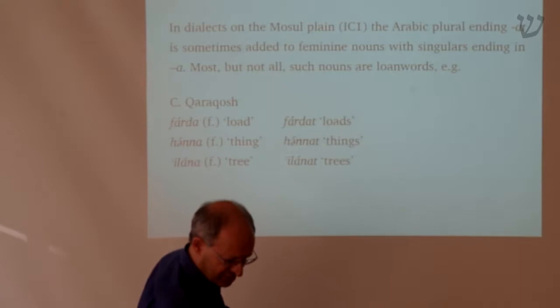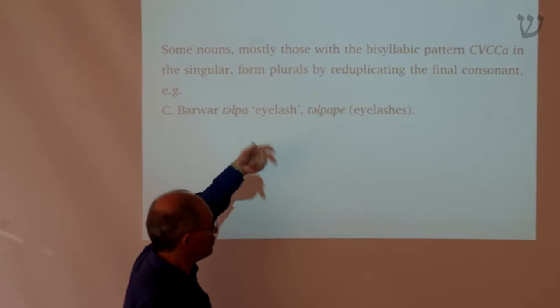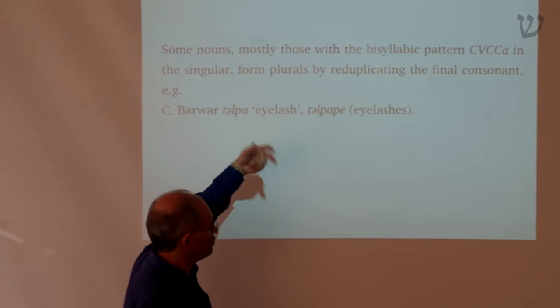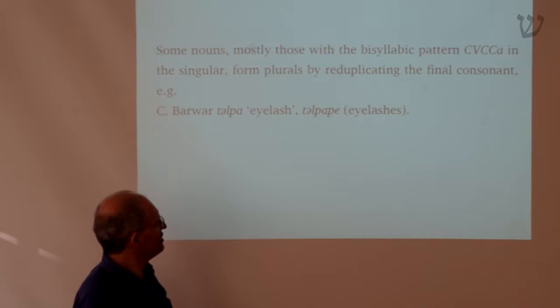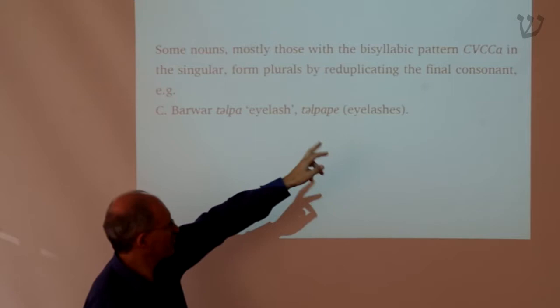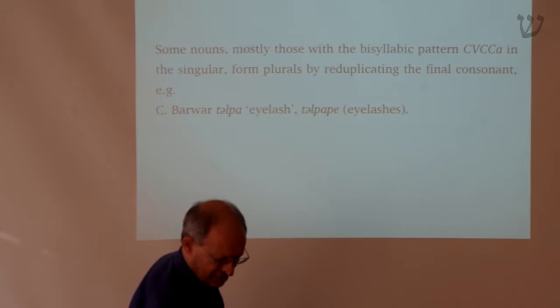Another way of expressing the plural in a number of words in the NENA dialects is by reduplication — having both the plural ending 'e' plus a reduplication of the final syllable. A word like 'tilpa' (eyelash) in Barwa, eyelashes is 'tipape'. These are typically formed from words with a syllabic pattern of CVCCV, like 'tilpa'. That is another strategy of forming the plural.